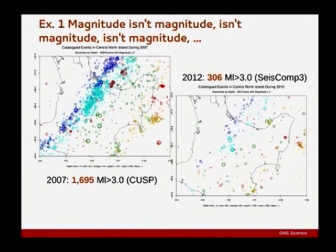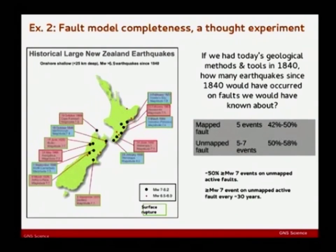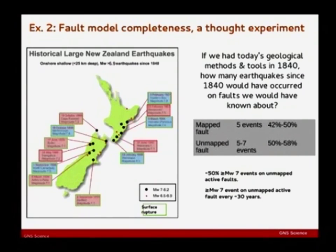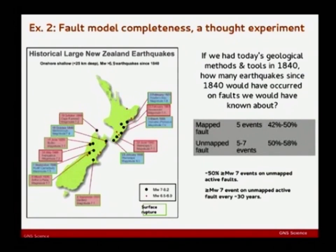Getting to the fault model: I've been having some good discussions with the paleoseismology team. A thought experiment: if we could go back 180 years and start all over knowing what we know now, how many earthquakes over the next 180 years would occur on faults that we actually knew about ahead of time? Here's a map of some of the larger events since 1840. The short answer is about half of the large earthquakes since 1840 would have happened on faults we would have known about ahead of time. So the question is, does that really line up with what we're saying in the national model and where we're putting future earthquakes?